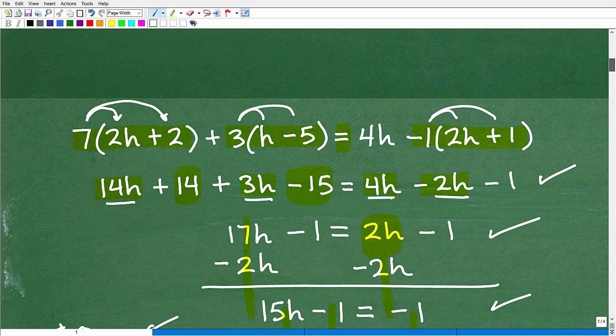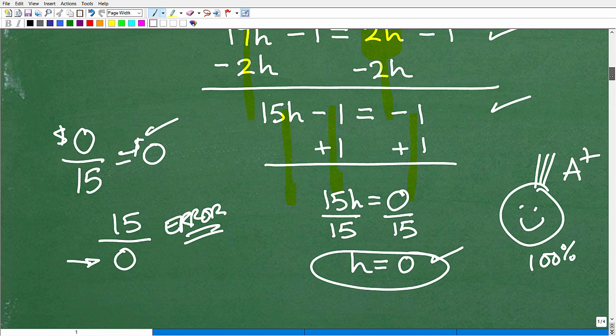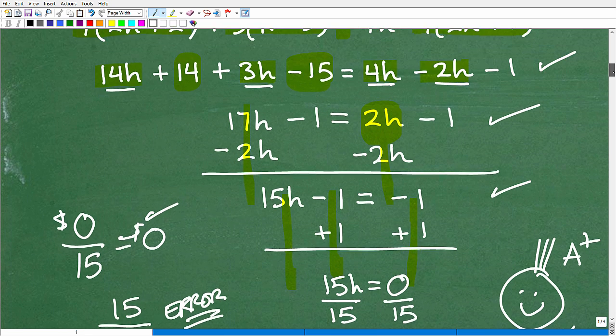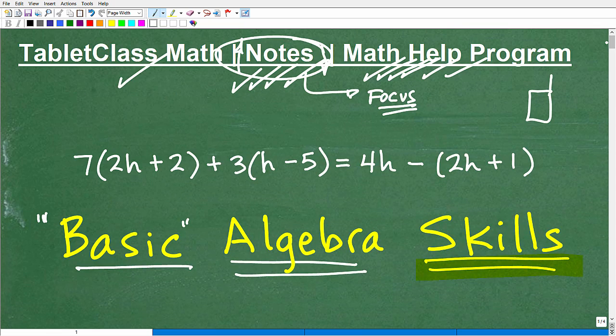So just make sure you understand the difference there. But that is the answer. So if you take a look at our work, you can see what we practiced here. Basic algebra skills: neatness, structure, distributive property, adding and subtracting, multiplying, dividing, positive and negative numbers. All this stuff is critically important. And you need to know this basic stuff, and you've got to practice these habits, so you can continue to progress onto more advanced equations and topics in algebra.